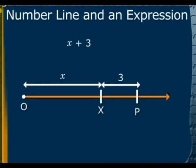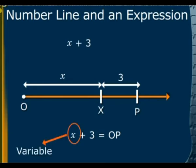Here, x may be anywhere in the number line. Consider O is equal to x and xp is equal to 3. Therefore, we can write x plus 3 is equal to op. Here, x is a variable and the value of x may be different.